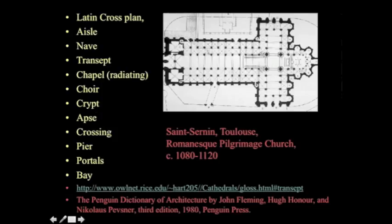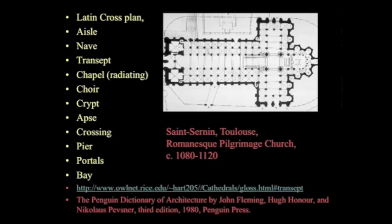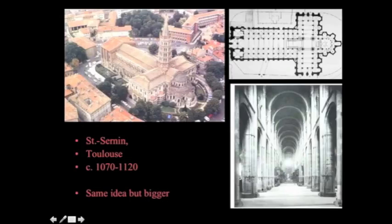We have a crypt — kind of the basement of the church — where many important church figures or royal figures are buried, and it might have a little chapel underneath there too. A pier is not a column. A column is fairly slender, whereas a pier is composite. So we have the crossing coming down on these thickened elements that are almost like pieces of a wall that have columns engaged in them.